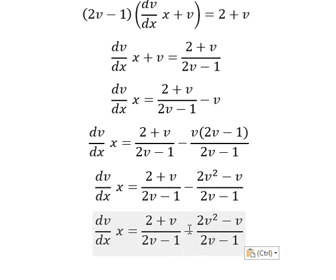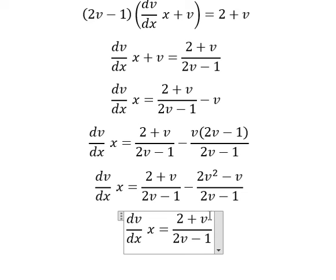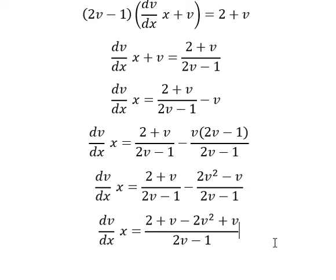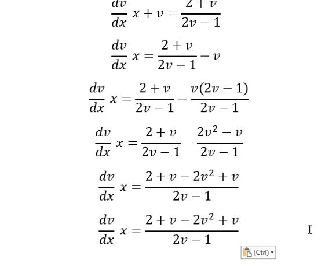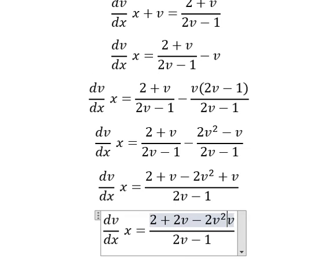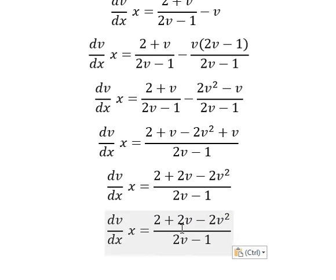So we have v multiplied by 2v minus one. Negative — we change the sign: 2v squared minus v becomes negative 2v squared plus v. So v plus v gives us 2v.